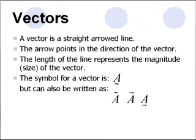A vector is basically just a straight-lined arrow. The arrow points in the direction of the vector, and its length represents its magnitude. The symbol for a vector is normally just a letter with a squiggly line underneath or on top.